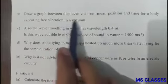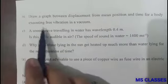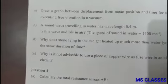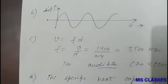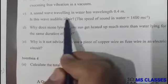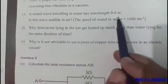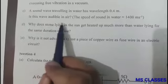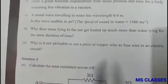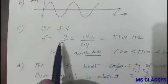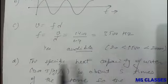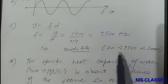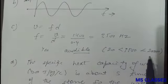Part (b): Draw a graph between displacement from mean position and time for a body executing free vibration in vacuum. This is the required diagram. Part (c): A sound wave traveling in water has wavelength 0.4 meter. Is this wave audible in air? V equals f lambda, from here we find 3500 hertz. Yes, it is audible as it lies between 20 hertz to 20,000 hertz.